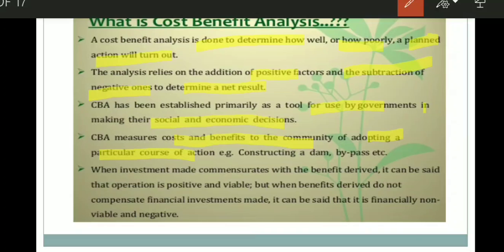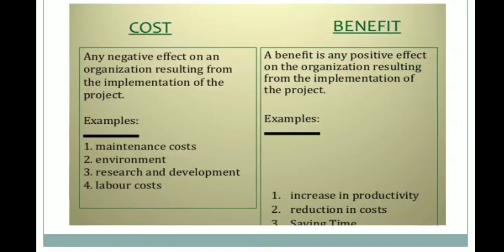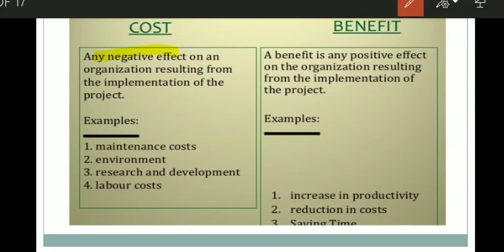When an investment is made with benefit derived, the operation is said to be positive and viable. When the benefit derived does not compensate the financial investment made, it is financially non-viable and negative. Any negative effect on an organization resulting from implementation of the project is called the cost — for example, maintenance cost, initial investment cost, environmental costs, and research and development or labor cost.